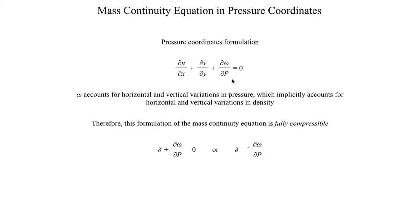This offers an advantage: it implicitly accounts for horizontal variations in density and pressure. One disadvantage, however, is that omega might not be zero at ground level. Using the approximation that omega equals −ρg·w, omega would be zero at the surface, but in the actual atmosphere there may be horizontal pressure variations, horizontal advection of pressure, or outside forcing like latent heat release above. So in the real atmosphere, omega is not strictly zero at the surface, though it is a good approximation.